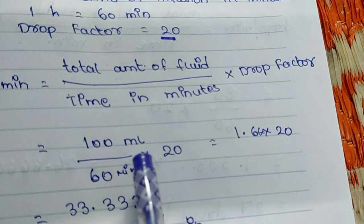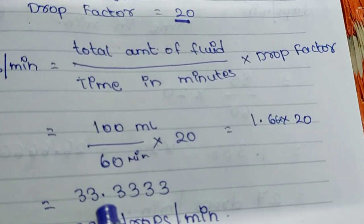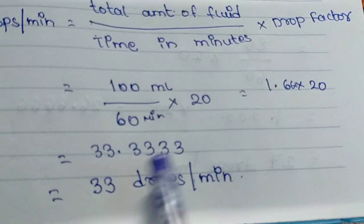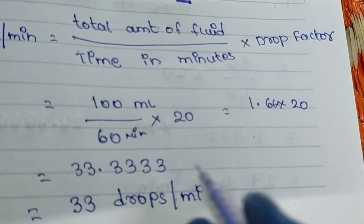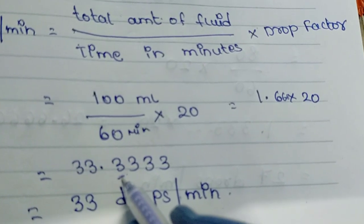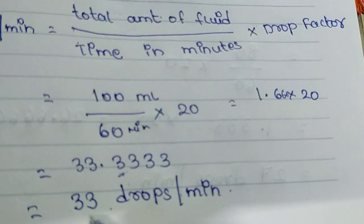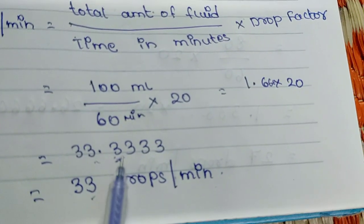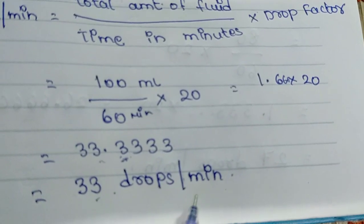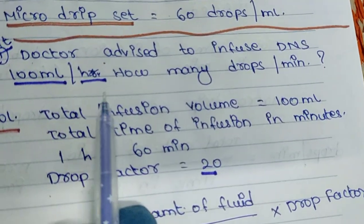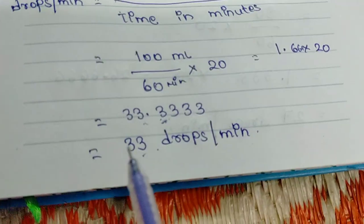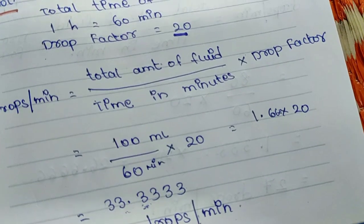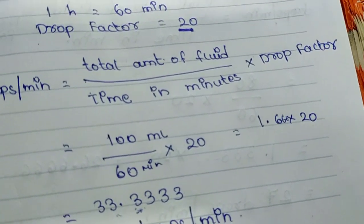Since 33.333 repeating — after the decimal point the number is 3, which is less than 5 — you round down to 33 drops per minute. If the number after the decimal were 5 or more, you would round up to the next digit. So if the doctor has advised 100 ml per hour of any fluid, you set 33 drops per minute. You count the drops for 15 seconds and multiply by 4 to set the drops per minute.